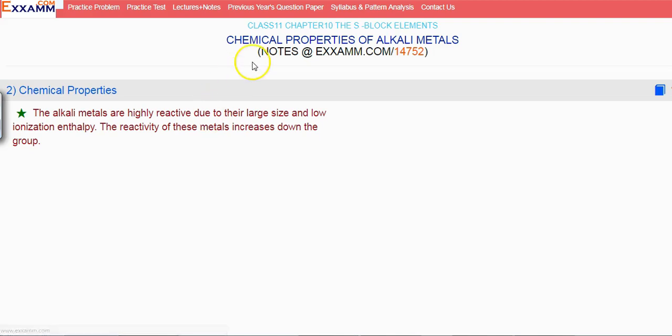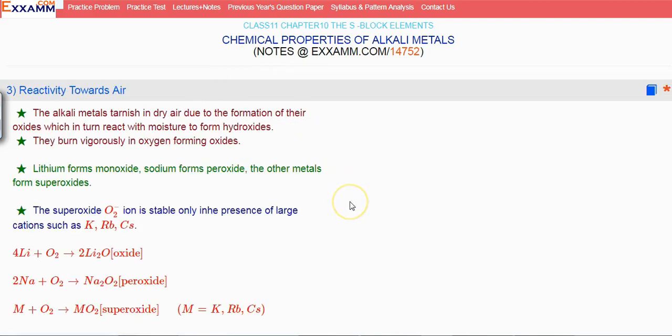Now discussing the first chemical property, we will discuss their reactivity towards the air. Alkali metals get tarnished in the air because of the formation of the oxide on the upper surface.